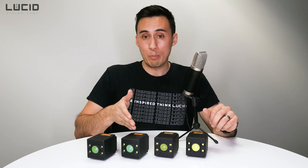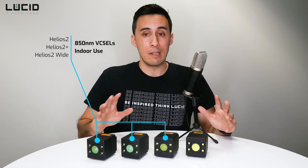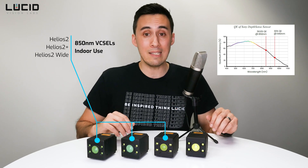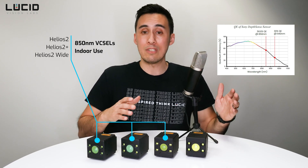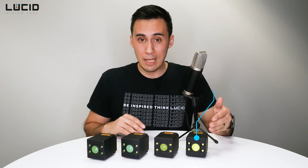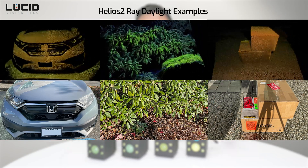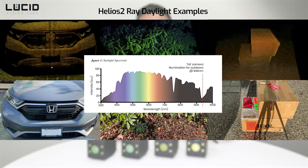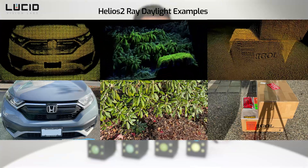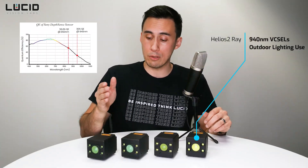The Helios II, Helios II Plus, and Helios II Wide are designed for indoor spaces and cannot operate in sunlight. These models are equipped with 850-nanometer wavelength VCSELs, which offer superior quantum efficiency with the DepthSense IMX556 sensor. However, when used outside in sunlight, the VCSELs will be washed out and you'll get no 3D data. The Helios II Ray, however, is equipped with 940-nanometer wavelength VCSELs, which allows it to operate in direct sunlight. There is a dip in the sunlight spectrum that allows the 940-nanometer wavelength to be used outdoors, though it has lower quantum efficiency, which reduces the accuracy and precision of the Helios II Ray compared to the II and II Plus.